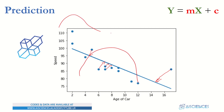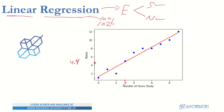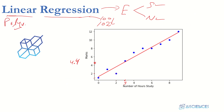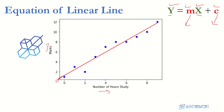When data doesn't fit a straight line, we use polynomial regression, which can fit curved lines of various shapes. We've covered linear regression — a straight line. Polynomial regression will be covered in the next video. We are AI Sciences — please subscribe to our channel and hit the bell icon so you don't miss any video.